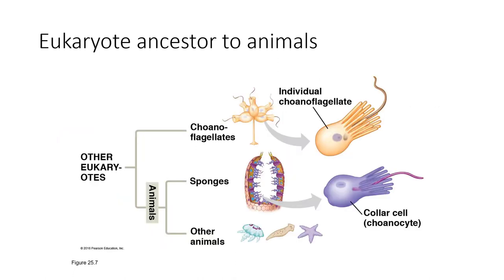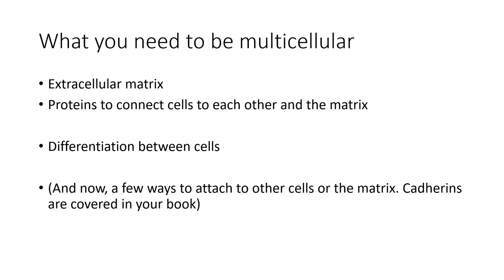In animals, choanoflagellates form a colony, sticking together and moving their flagella to capture and digest food. Sponges, on the other hand, have cellular differentiation and an extracellular matrix with little spicules holding cells together. Other animals arose from multicellular sponges with further differentiation and more complex extracellular matrices. So what's needed to be multicellular? First, the extracellular matrix. Next, proteins to connect cells to one another and to the matrix. And last, differentiation between cells.